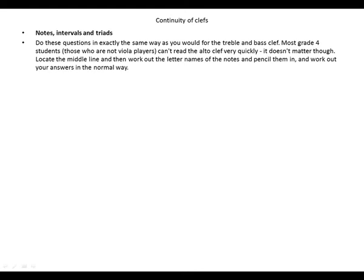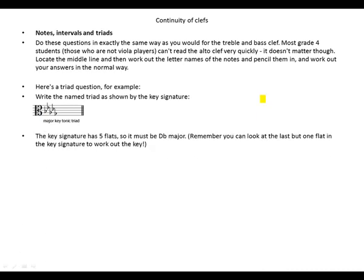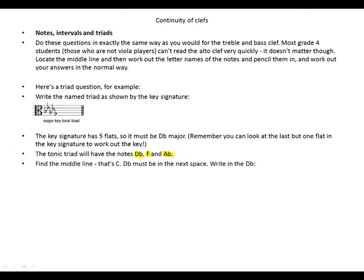Here's a triad question, for example: write the named triad that's shown by the key signature. This is our major key — the key signature has five flats, so it must be D flat major. Remember, you can look at the last but one flat in the key to work out the key. The tonic triad will have the notes D flat, F, and A flat.